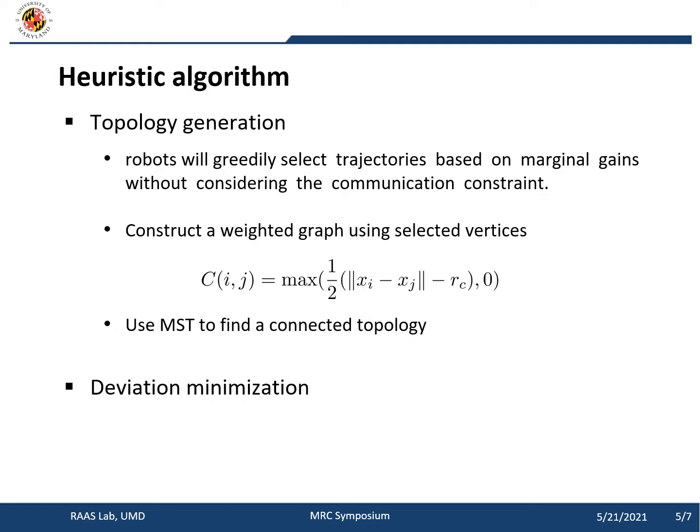To solve this problem, we propose a two-stage heuristic algorithm. In the first stage, we let robots do greedy selection without considering communication constraints at all, and we use the greedy selection to generate a desired topology. In the second stage, we use quadratic programming to move the robots to realize that desired topology. We call such a process deviation minimization.